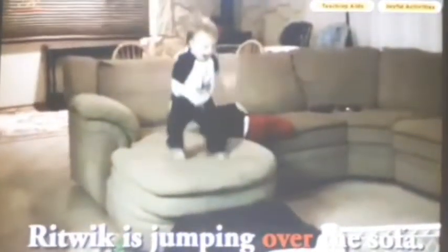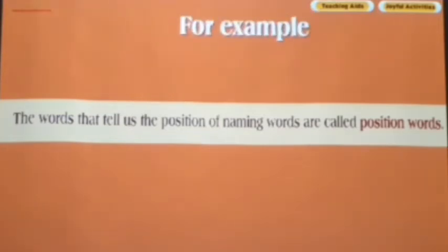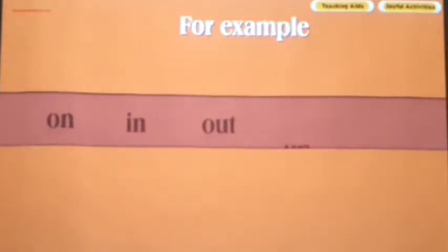Ritwik is jumping over the sofa. Here, words like under, in, on and over are called position words. The words that tell us the position of naming words are called position words. For example, on, in, out, up, down.